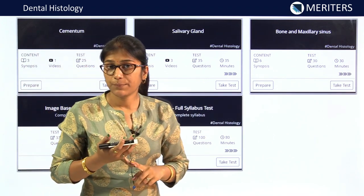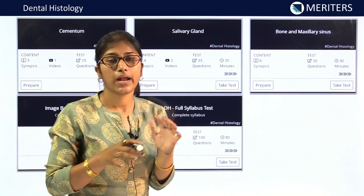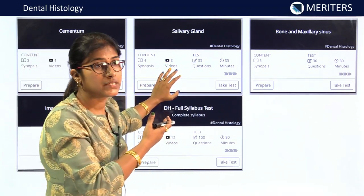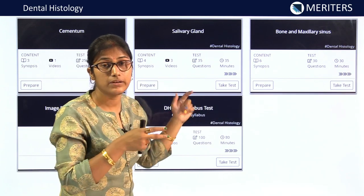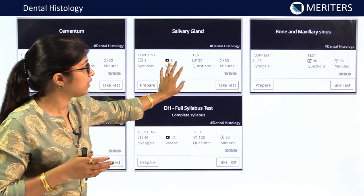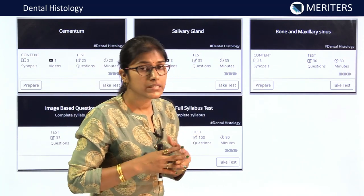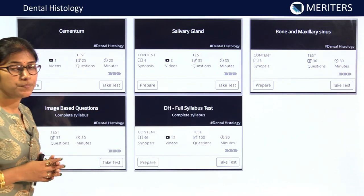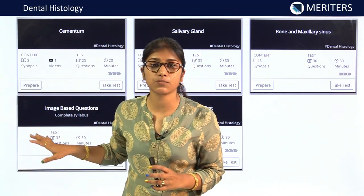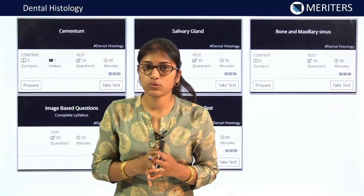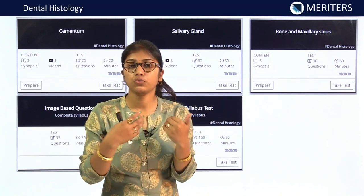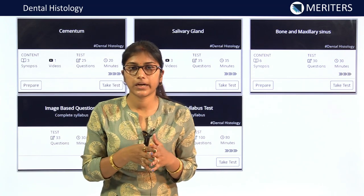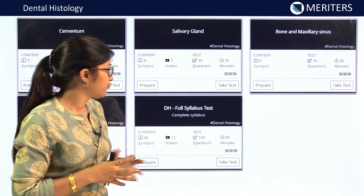Further tasks include: pulp and zones of pulp — many questions on fibers, nerve fibers, collagen fibers, zones, and function. Cementum — types, location, function, and basic structure. Salivary glands — myoepithelial cells and IBQs from recent exams. Bone and maxillary sinus — histology of bone including osteoid. A special task for image-based questions only has been put so you can go through all images from standard textbooks like Orban's.